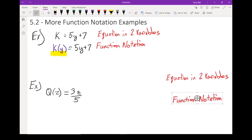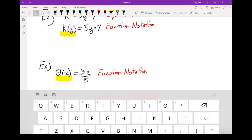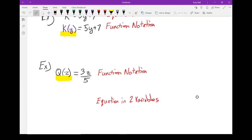Let's do another example. So here I've got q(z) equals 3z over 5. Now that one is function notation because it's written as q(z). If I want you to rewrite it as an equation in two variables, we would simply rewrite it without that bracketed z part, this part right here. So I would rewrite this as q equals 3z over 5.